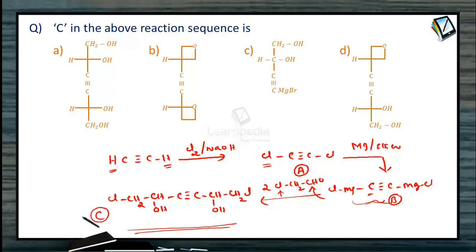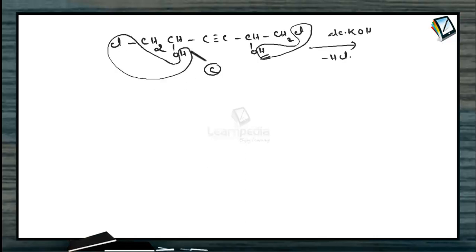So thus, this becomes C. Then what are we doing with this C? The next step. So C is Cl-CH2-CHOH-C triple bond C-CHOH-CH2Cl. And this we are treating with KOH. So when we treat with KOH as alcohol, HCl is eliminated. So this hydrogen being more acidic, this hydrogen with this chlorine will come out in the form of HCl. Similarly here, this particular hydrogen with this chlorine will come out. So minus HCl indirectly. So what will happen? This is CH2-CH and O. And this C triple bond C remains same. This also becomes CH-CH2-O. So this is D.